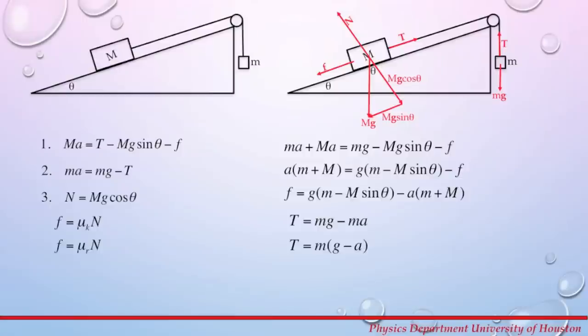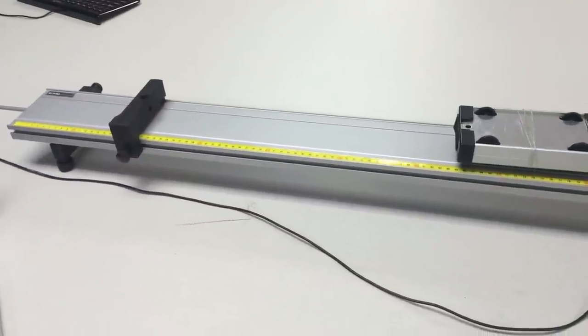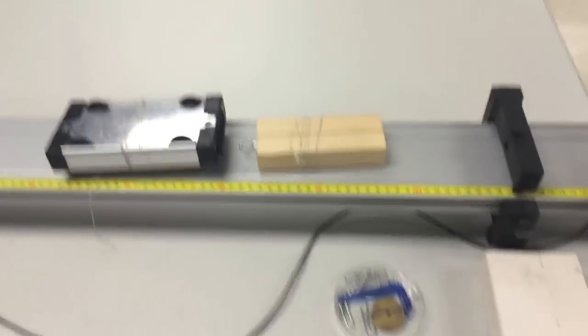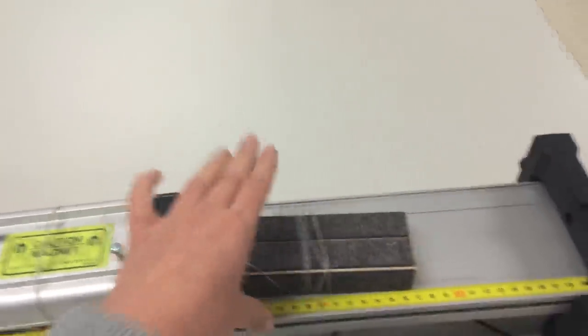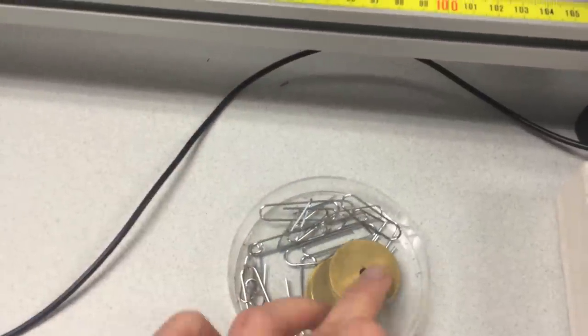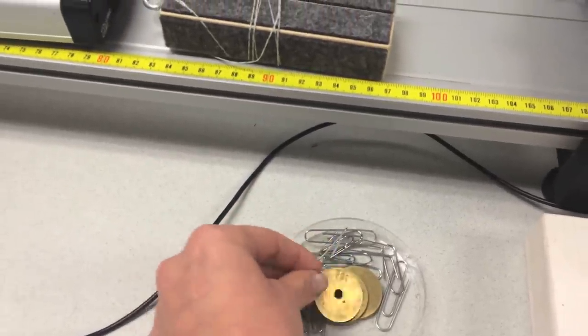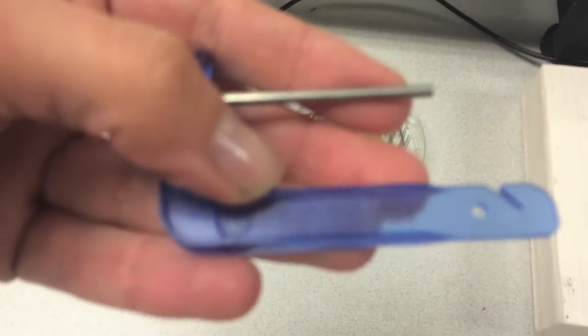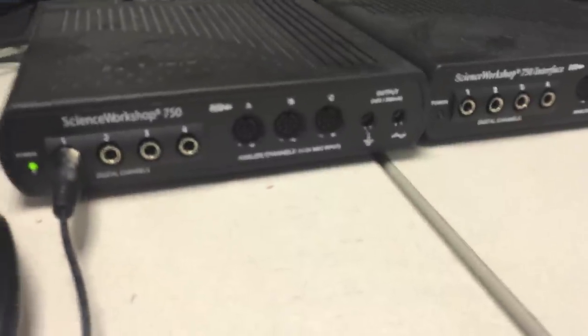Now we will do the actual experiment. This is the setup for this week. On the table you have an air truck with a dynamic cart placed on it. You also have a wooden block, some paper clips, two 20-gram masses, one 10-gram mass, and a 5-gram mass hanger. On the air truck there is a photogate recording the motion of the smart pulley, which is connected to a Science Workshop interface and then to a computer.